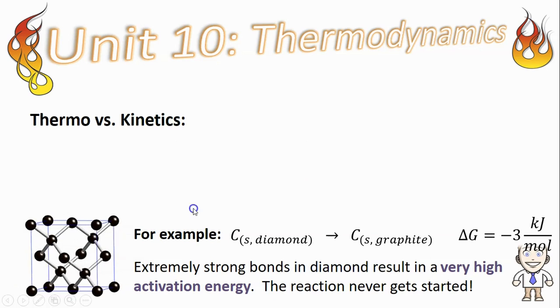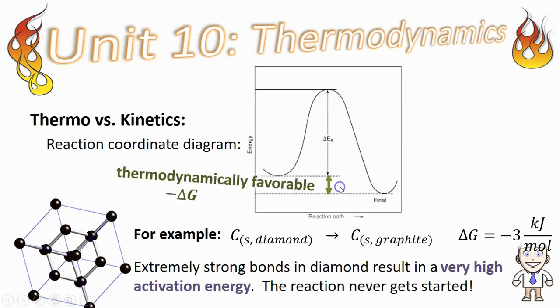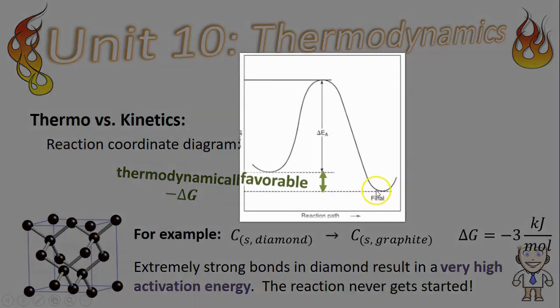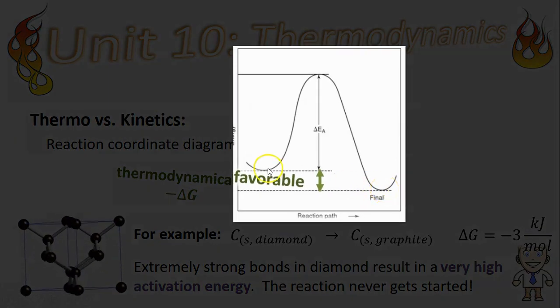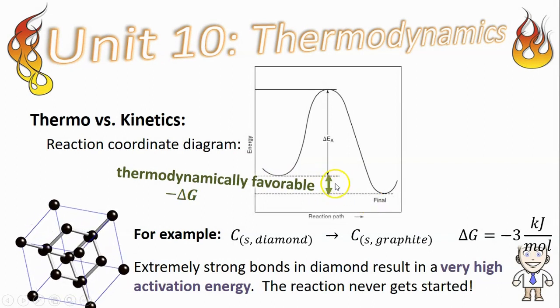We can see this difference represented graphically in what's called a reaction coordinate diagram. You'll notice that the products here in this final position have less energy than the reactants, indicating free energy was released and that the reaction should be spontaneous.